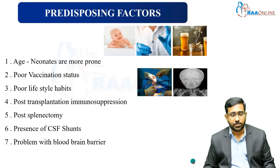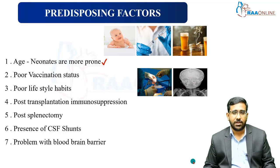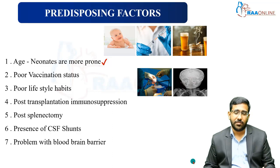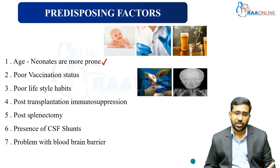Let us go into the predisposing factors. There are various predisposing factors — seven are very important. The first is age group. Neonates are more prone to this kind of invasive infection because they have less cell-mediated immunity, and humoral immunity is also very low in the neonatal population. This makes them more prone to invasive infections like meningitis.